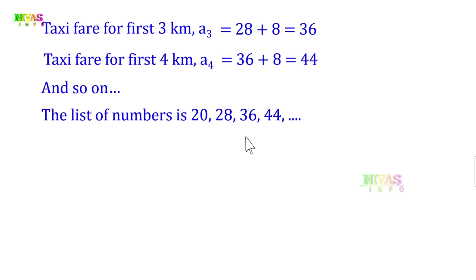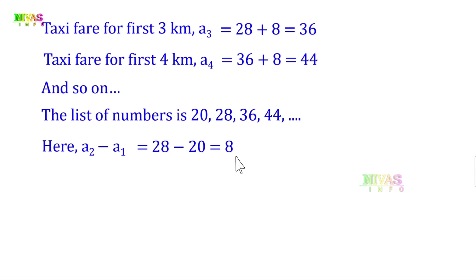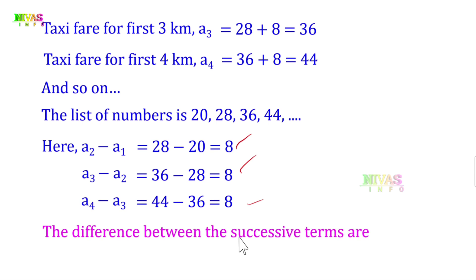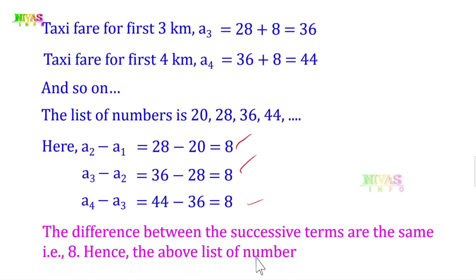We can confirm this is arithmetic progression: A2 − A1 = 28 − 20 = 8; A3 − A2 = 36 − 28 = 8; A4 − A3 = 44 − 36 = 8. The common difference is fixed at 8. Since the difference between successive terms is the same, the above list of numbers forms an arithmetic progression.